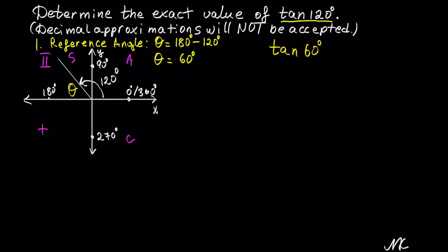S falls in the second quadrant, which means that sine and its reciprocal is positive in the second quadrant, and everything else is negative, so tangent of 60 degrees will be negative in the second quadrant.